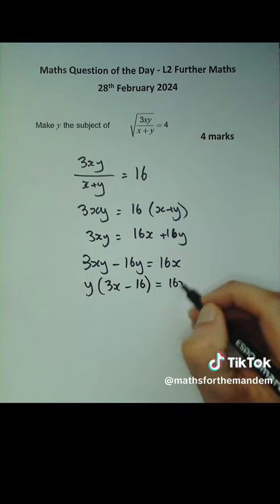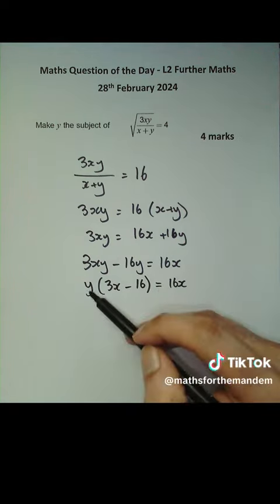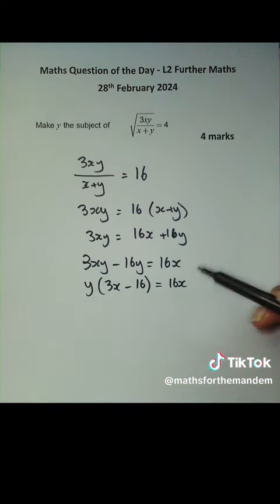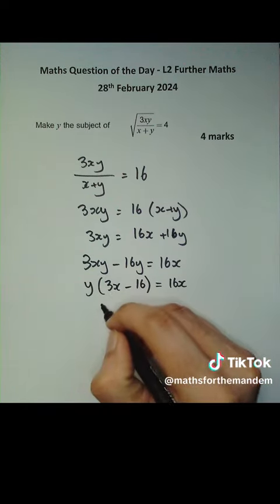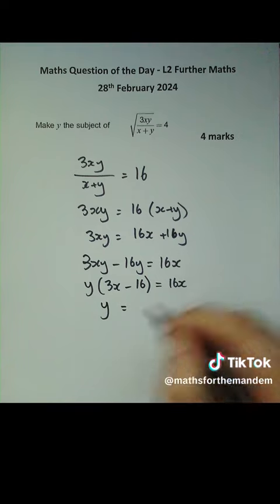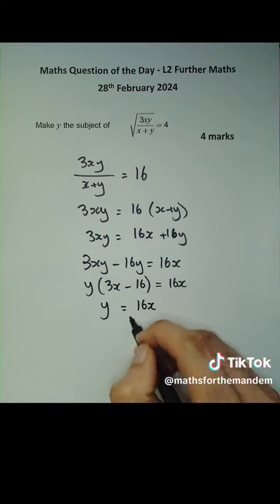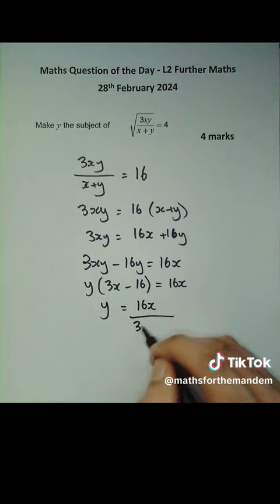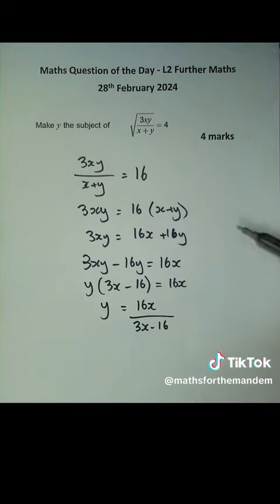And last thing is we want y, but we don't want it multiplied by this bracket. So we divide both sides by the bracket to leave us with the y on this side that we want equal to our 16x that was here divided by this bracket. So 3x minus 16. And we've just made y the subject, and that was a genuine four mark past exam question from Level 2 Further Maths.